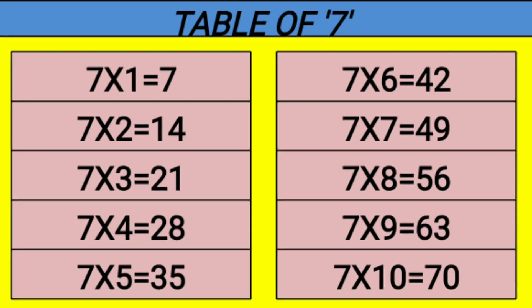Table of 7. 7 1s are 7, 7 2s are 14, 7 3s are 21, 7 4s are 28, 7 5s are 35.